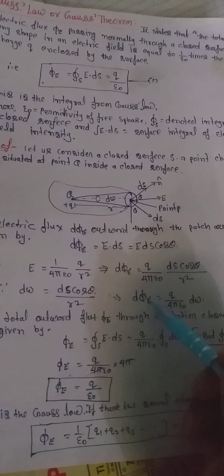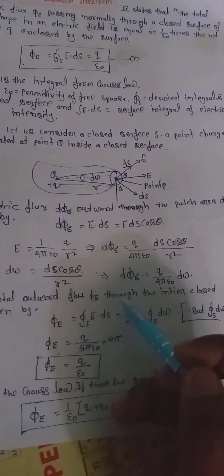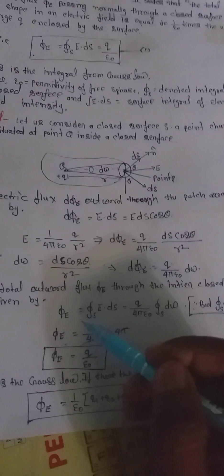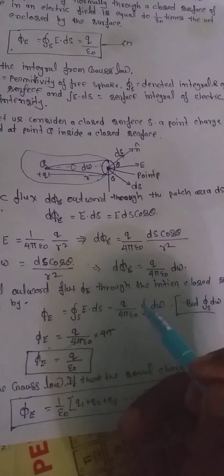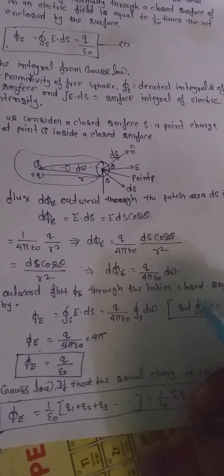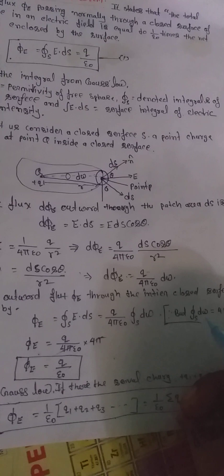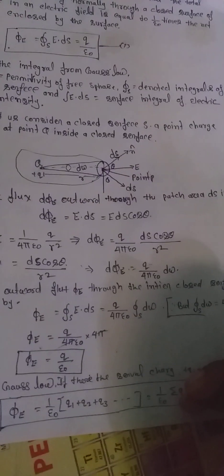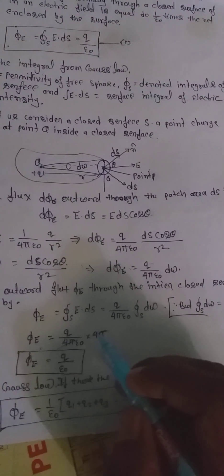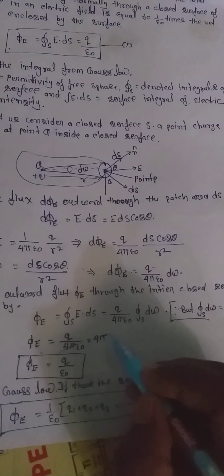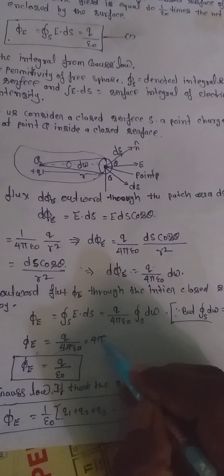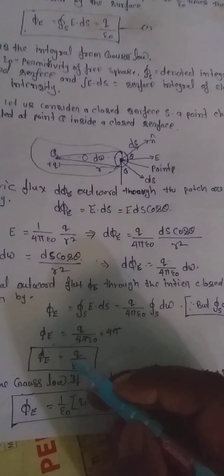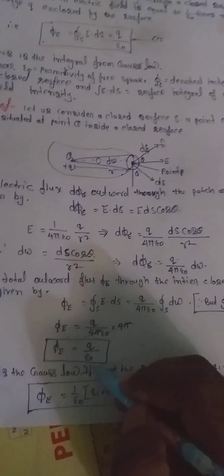The total outward flux Φ_E throughout the entire closed surface is Φ_E = ∮E·dS = (q/4πεₒ)·∮dω. The closed surface integral of dω equals 4π. Substituting this, Φ_E = (q/4πεₒ)·4π, and the 4π terms cancel, giving Φ_E = q/εₒ.